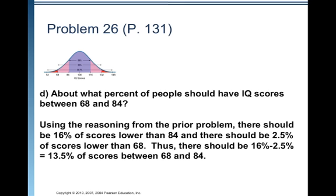Because remember, we figured out that 68 percent are between 84 and 116. And then 16 percent are higher than 116, which leaves us 16 percent to be lower than 84. But that's too much because that includes the whole tail. So we need to figure out what percent is in that tail to the left of 68 and subtract that off.